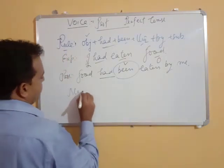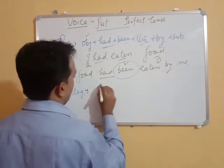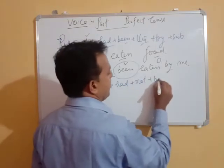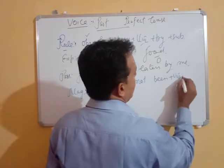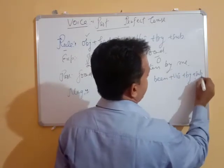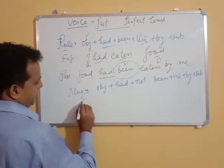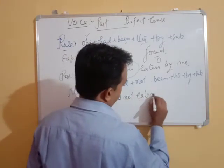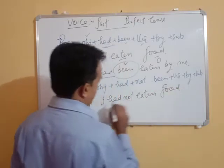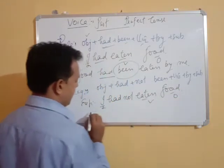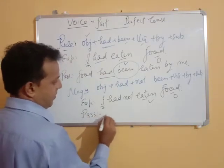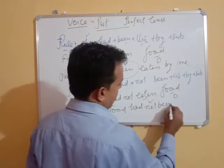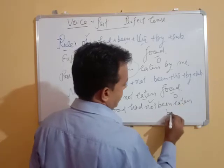Now let's see the rule for negative sentences. The structure is: Object + had not been + V3 + by + subject. Example: 'I had not eaten food' — 'I' is the subject, 'eaten' is the verb, 'food' is the object. Passive: 'The food had not been eaten by me.'